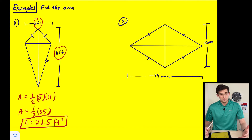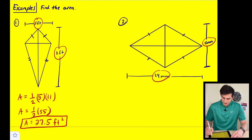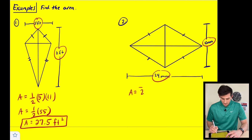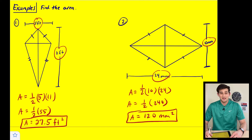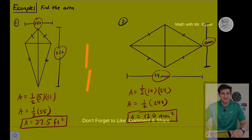For number two we're looking at a rhombus with two diagonals of 10 and 24 millimeters. Area is equal to one half times 10 times 24, which is half of 240. So our area is equal to 120 square millimeters. And that is how you find the area of a rhombus and a kite.